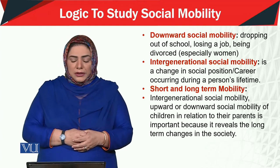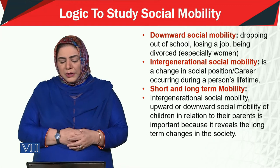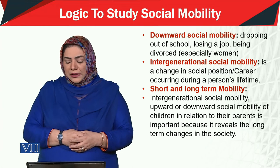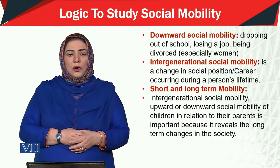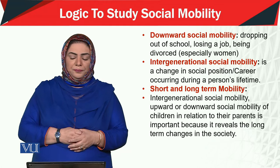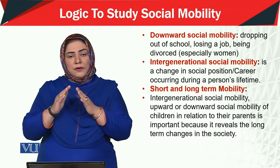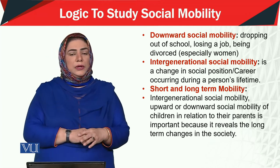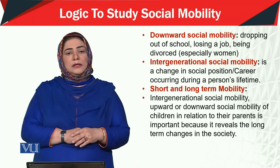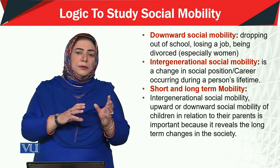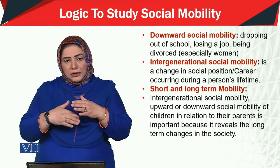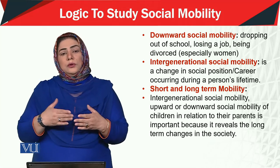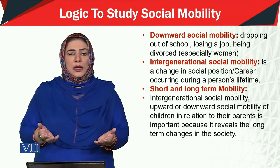Then there is short-term and long-term mobility. Intergenerational social mobility — whether upward or downward — of children in relation to their parents is important because it reveals the long-term changes in social mobility. If only one person is influenced, it will be short-term. But if because of one person the entire family's status changes, that is a different dimension — long-term intergenerational mobility.